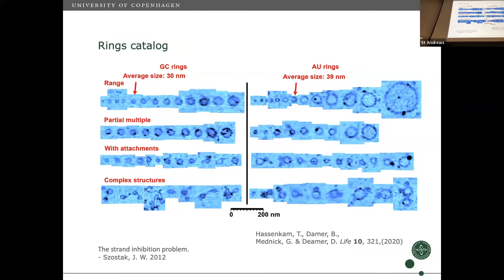We formed a catalog of different rings, taking thousands and thousands of rings. The average size for GC rings is around 30 nanometers and for AU rings around 39 nanometers. You can see them with different attachments, rings that come in pairs coupled to each other. The interesting thing about rings is they get around the strand inhibition problem. At a certain length you cannot template copy by Brownian motion alone, but if you have a ring small enough you can detach from the template ring by just Brownian motion.